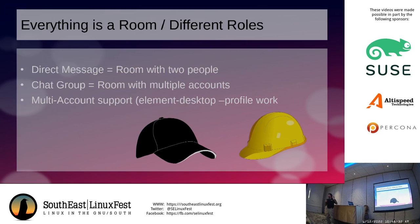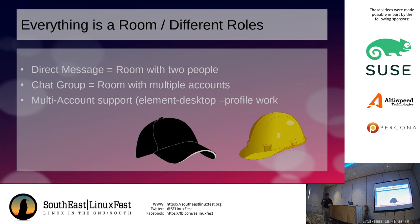Everything in Matrix is a room — this is an important concept. When you create a room, you can invite one person to it. If you have a room with just two people, most other chat platforms would call that a direct message. In Matrix, it's just a room with two people. You can tap 'send a direct message' but understand that under the hood, you're creating a room, inviting yourself, and inviting the other person. If you want to create a chat group — like a Telegram group or Signal group — you can do that. To Matrix, it's just a room with more than two participants. I put multiple accounts — not multiple people — because you as an individual might have multiple accounts.